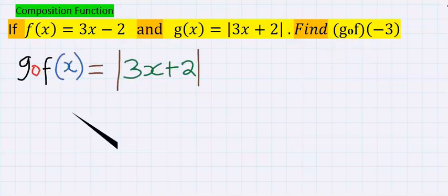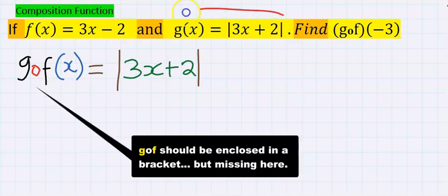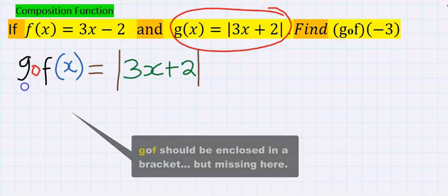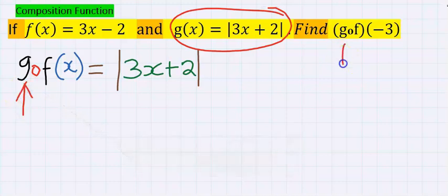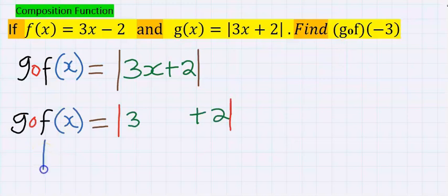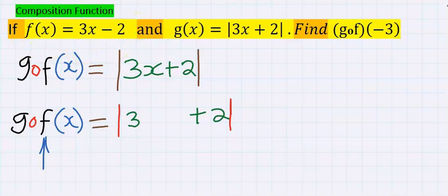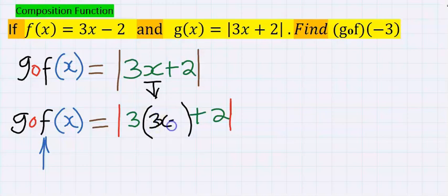To solve this problem, I'm going to write the value of g of x first because it came first in the question. Next, I will consider the value of f of x, which is 3x minus 2, and I will replace x in that position. Hence, instead of x, I'm going to replace it with 3x minus 2. This is now the value of g of f.